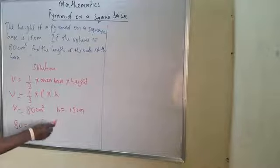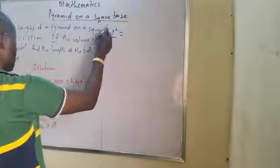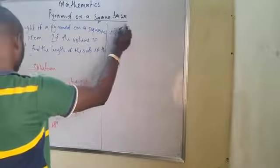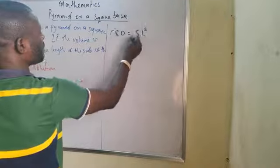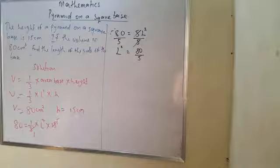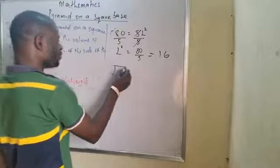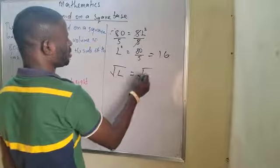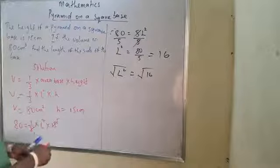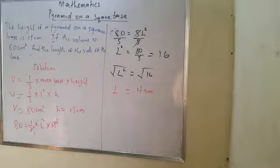So I can say: 80 equals 1/3 multiplied by L squared multiplied by 15. Simplifying, 15 divided by 3 gives 5, so 80 equals 5 L squared. Dividing both sides by 5: L squared equals 80 divided by 5, which is 16. Taking the square root of both sides: L equals the square root of 16, which is 4. Therefore L equals 4 cm.